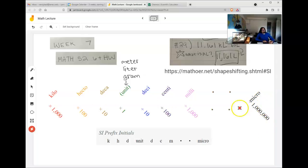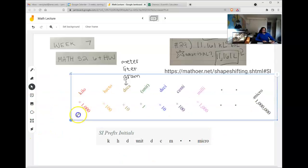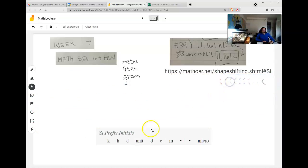So most people don't want this long colorful table. We'll say thank you. Shrink that out of the way. Instead, we're just going to use the initials. K-H-D, the plane unit, D-C-M dot dot micro. And they'll have that in their notes. They'll just memorize that.